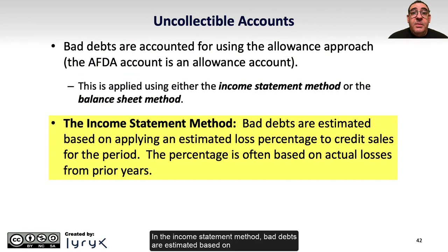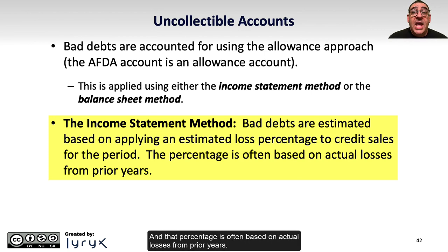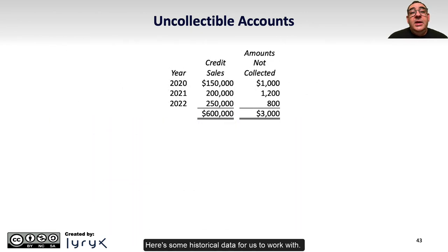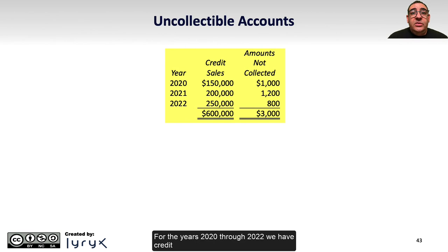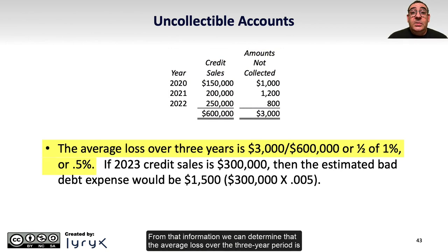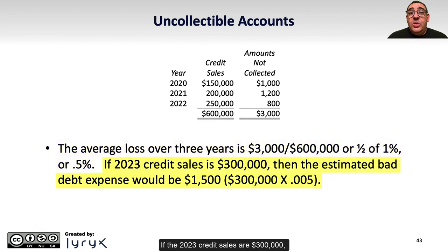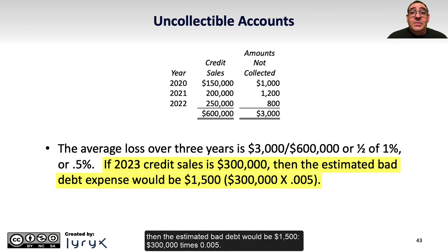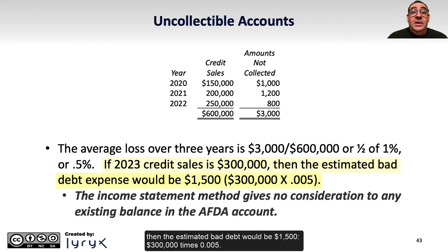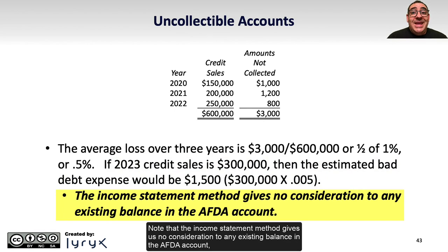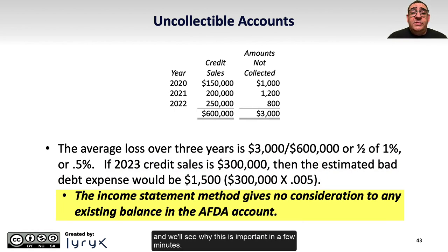This is applied either using the income statement method or balance sheet method. In the income statement method, bad debts are estimated based on applying an estimated loss percentage to credit sales for the period, and that percentage is often based on actual losses from prior years. Using historical data for 2020 through 2022, the average loss over the three-year period is $3,000 divided by $600,000, which equals 0.5%. If the 2023 credit sales are $300,000, then the estimated bad debt would be $1,500 ($300,000 times 0.005). Note that the income statement method gives no consideration to any existing balance in the AFDA account.